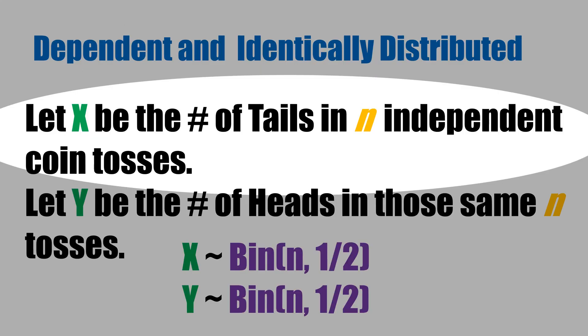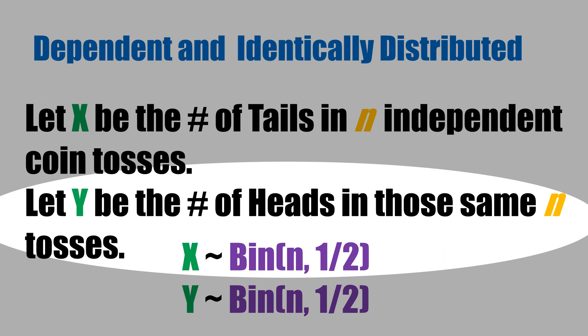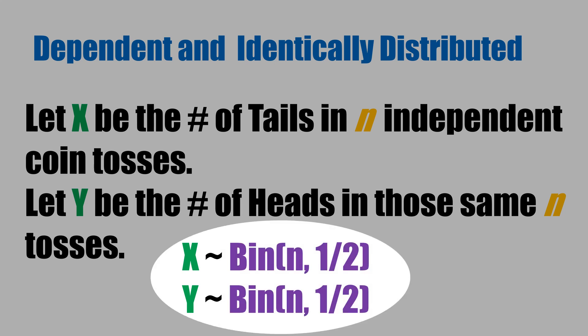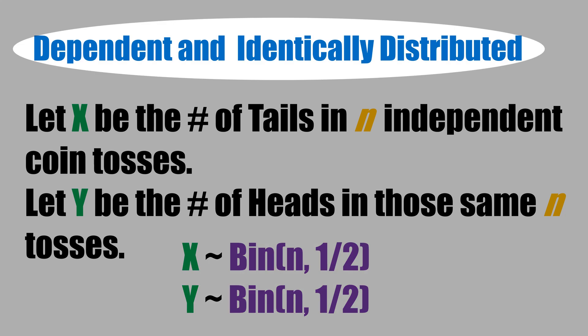Now let x be the number of tails in n independent coin tosses and let y be the number of heads in those same tosses. In this case, x and y are clearly dependent — if you know x, you know y and vice versa. Note that x and y have the same distribution: binomial with n trials and probability of success one half. Therefore, they are dependent and identically distributed.